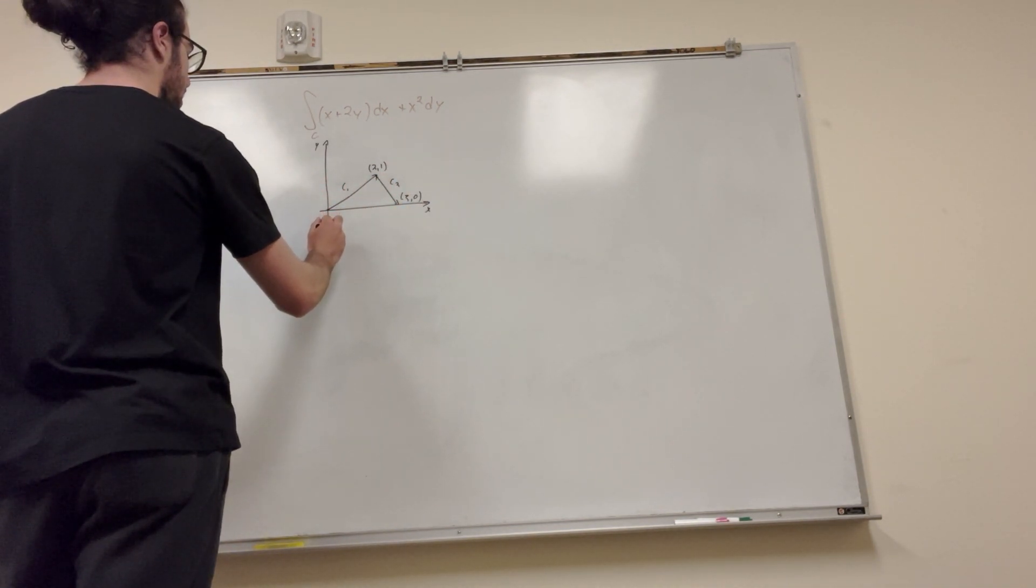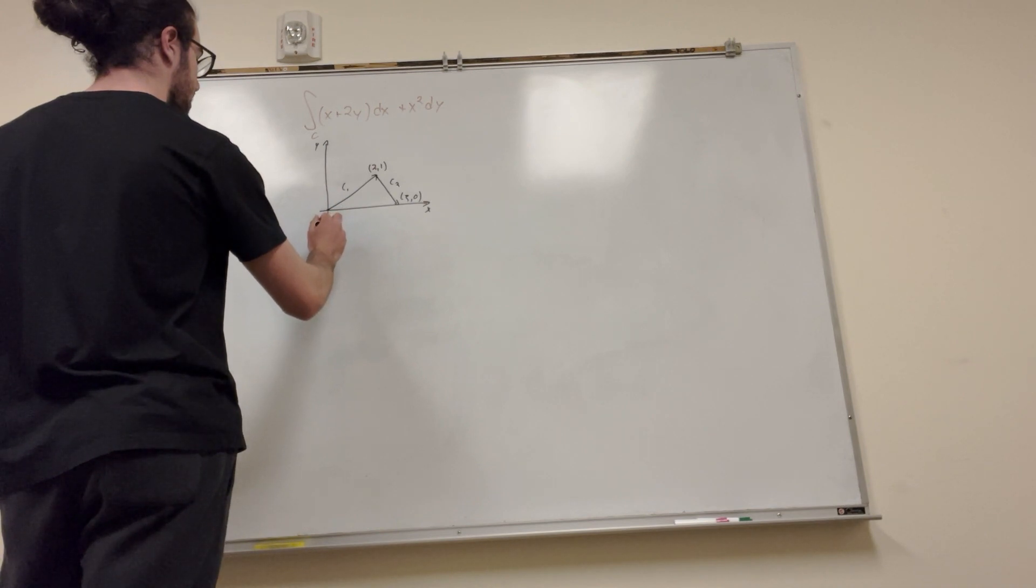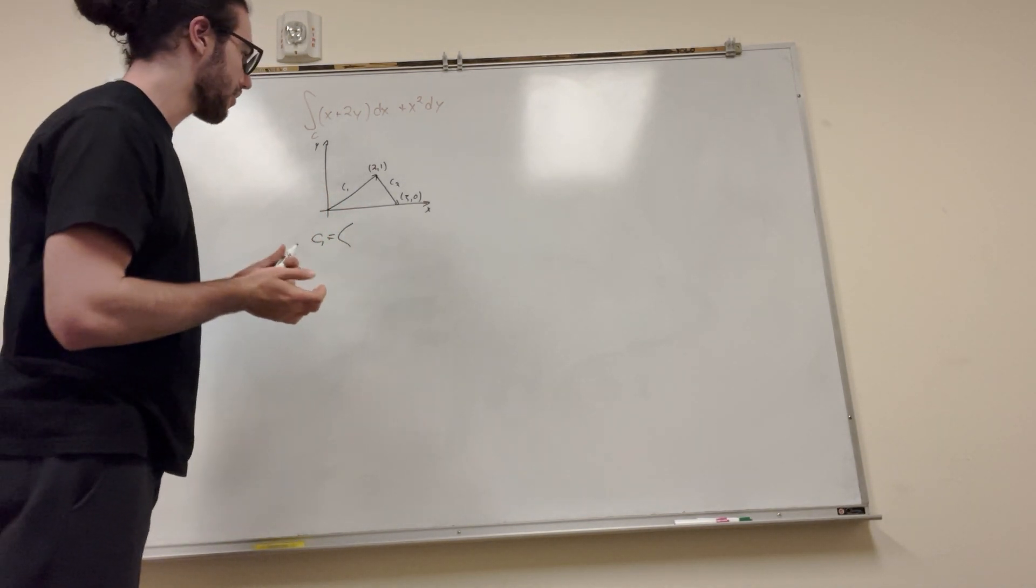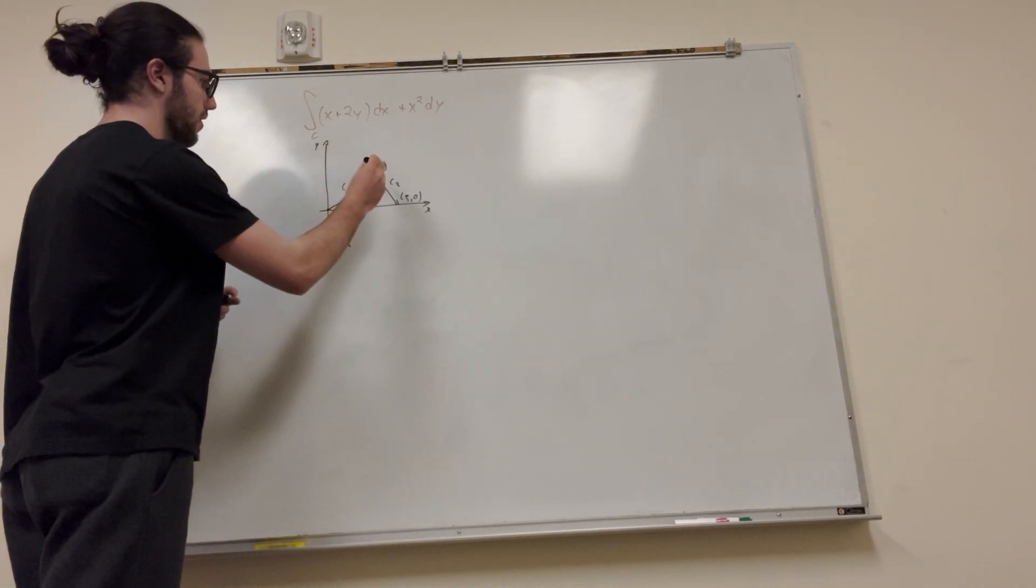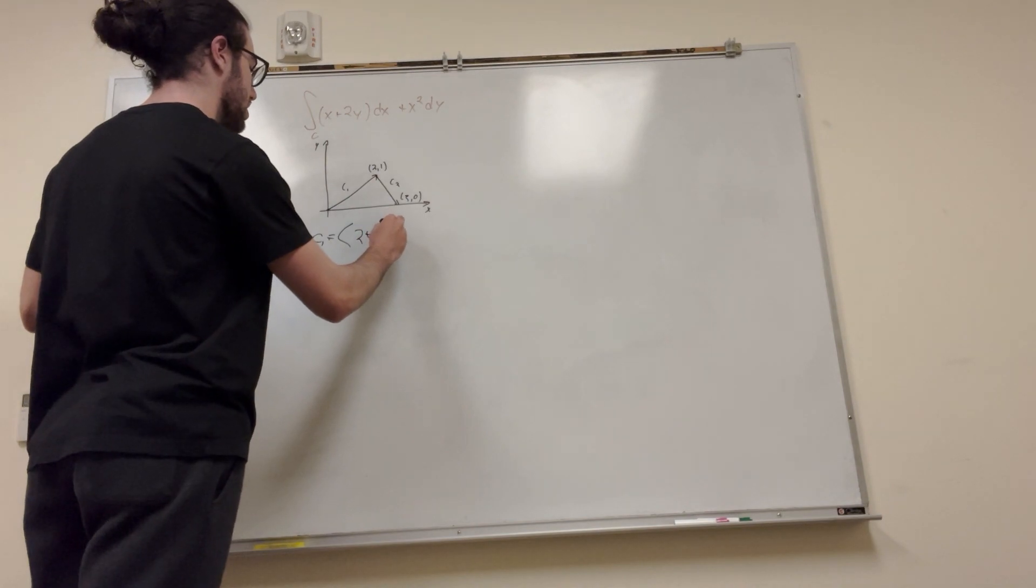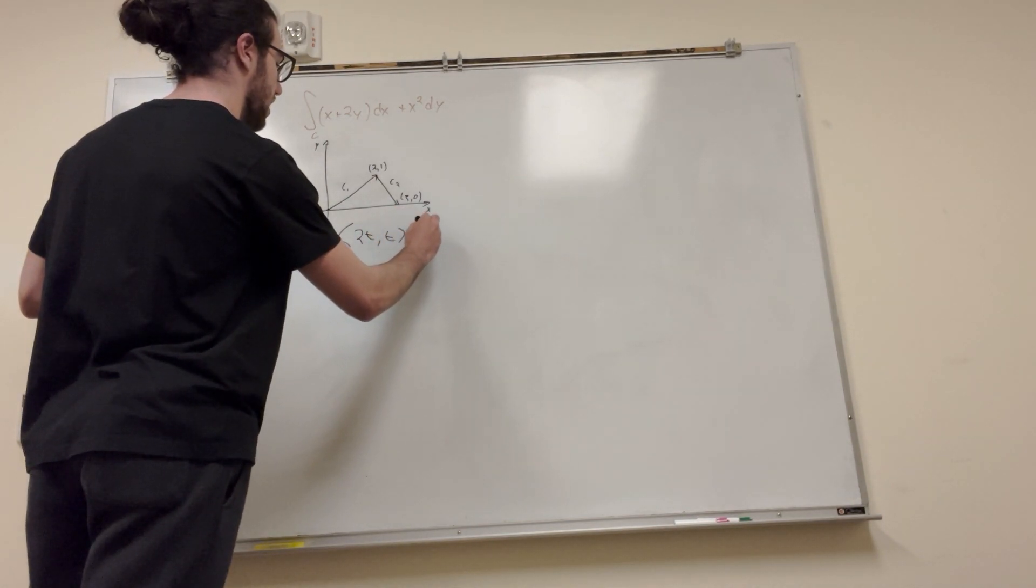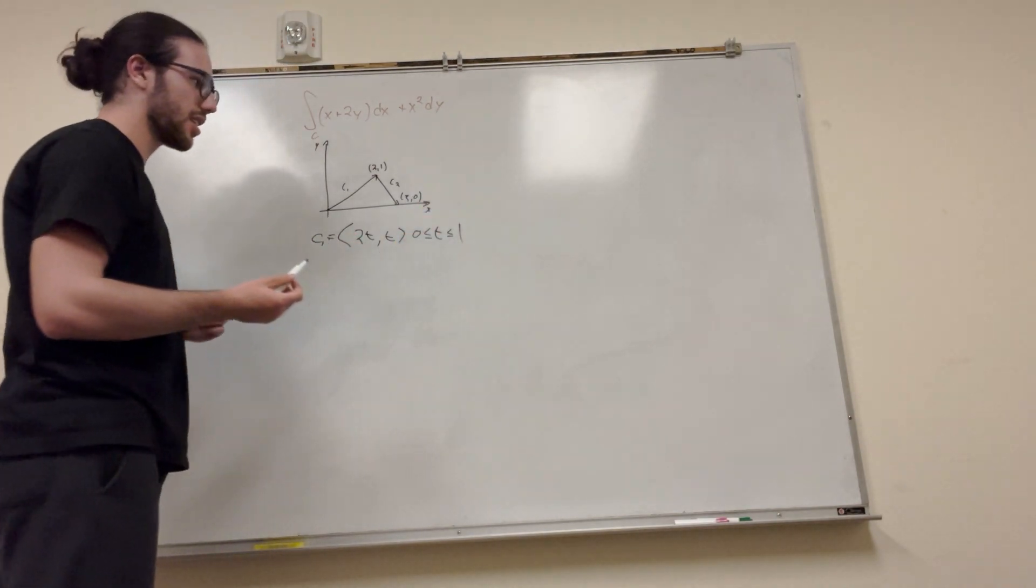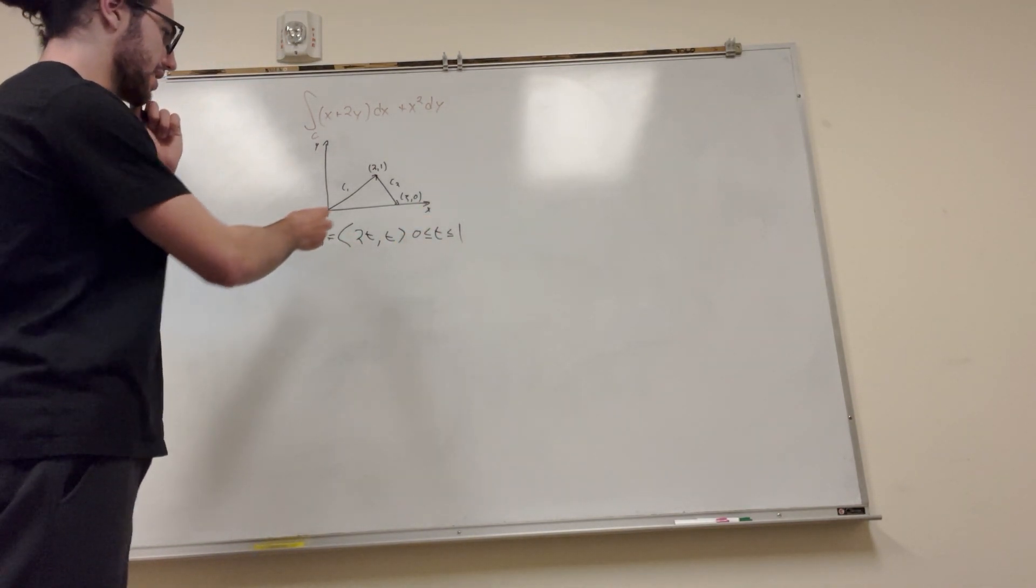So c1 is equal to... it starts at the origin, so it's going to just be a line segment from (0,0). So it goes over 2 and up 1, so it's going to be 2t and then just t on the integral, or on the section from 0 is less than t and t is less than 1. All right, so that's c1.